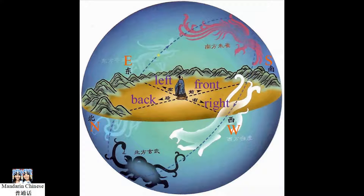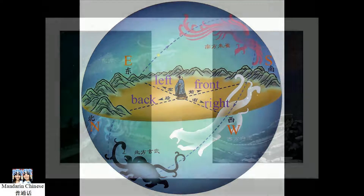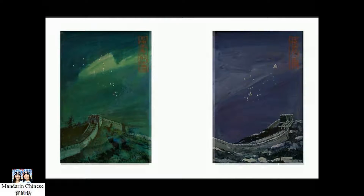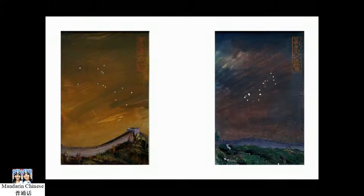Ancient Chinese astronomers used the night sky to determine the four seasons. They would observe the position of stars over fixed locations to ascertain the beginning and end of each quarter.